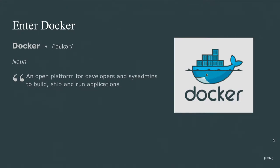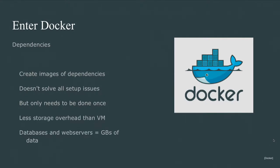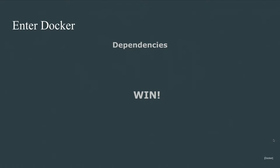The Docker website describes it as an open platform for developers and sys admins to build and run applications — and in our case that's exactly what we wanted: a platform to run our dependencies. The typical workflow is creating an image of your dependencies and pushing it to a registry for later use. It doesn't solve all setup issues, but by pushing to a registry it makes things reusable in a way that a VM is not — more easily shareable, less storage overhead — and we can pre-configure databases and web servers containing gigabytes of data without having to pass around a full operating system.